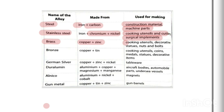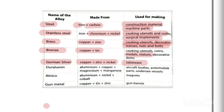Bronze is a homogeneous mixture of copper and tin, used for making cooking utensils, coins, medals, and statues. German silver is a homogeneous mixture of copper, zinc, and nickel, used in making tableware. Duralumin is an important alloy made from aluminium, copper, magnesium, and manganese — four metals mixed together.